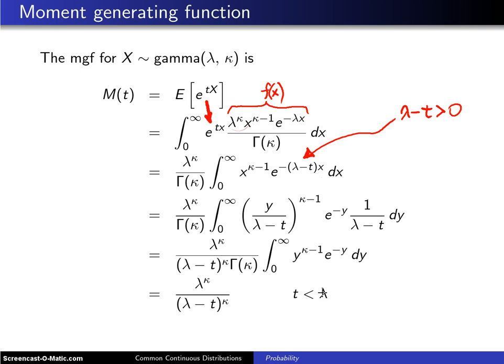So going from this step to the next step, we make a substitution and that is we're going to let y equal lambda minus t times x. Now why did we think of that? We want to take this e raised to a power here and simplify what is up in the exponent. When you make that substitution, the integral will look like this.